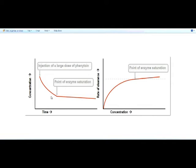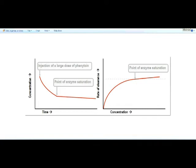But at the point where all enzymes in the body are utilized for elimination or metabolism of phenytoin, what follows is zero order kinetics, where the rate of metabolism or elimination is not proportional to — is independent of — concentration, because the system is saturated. After this point, the rate of elimination is independent of drug concentration. These two graphs explain first order kinetics, the saturation point, and how first order changes to zero order kinetics.